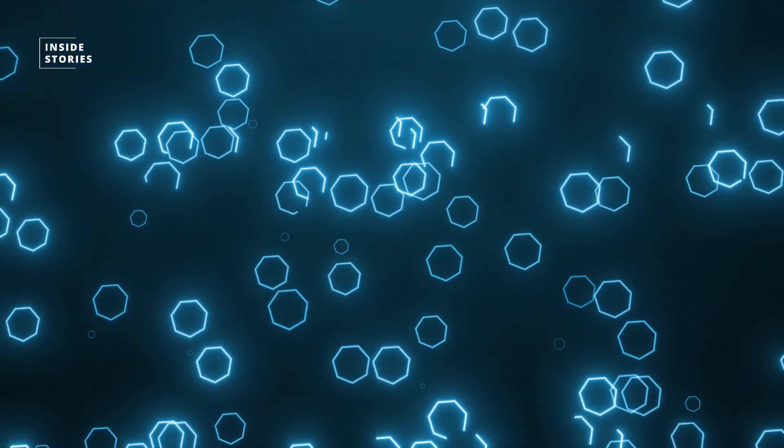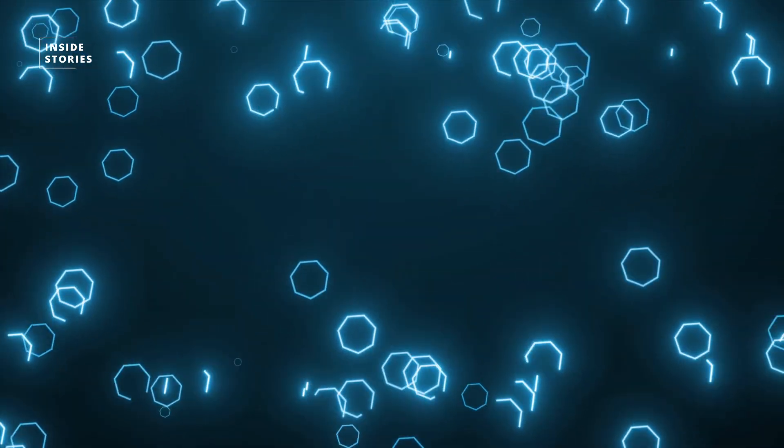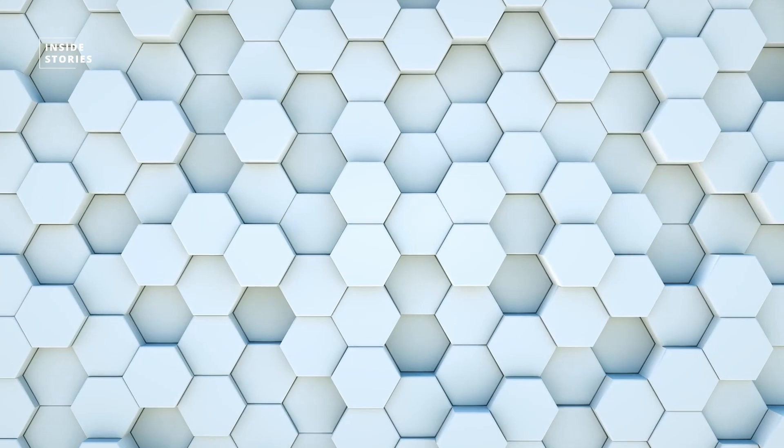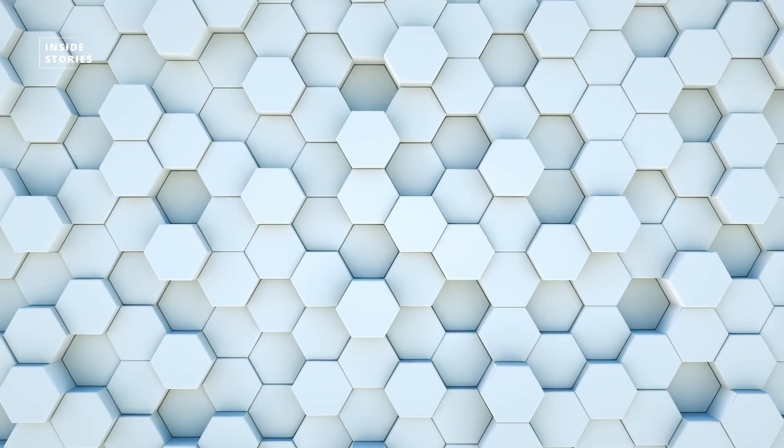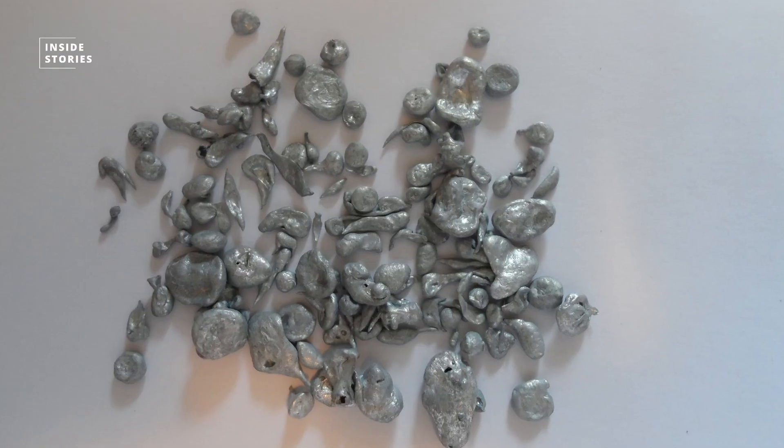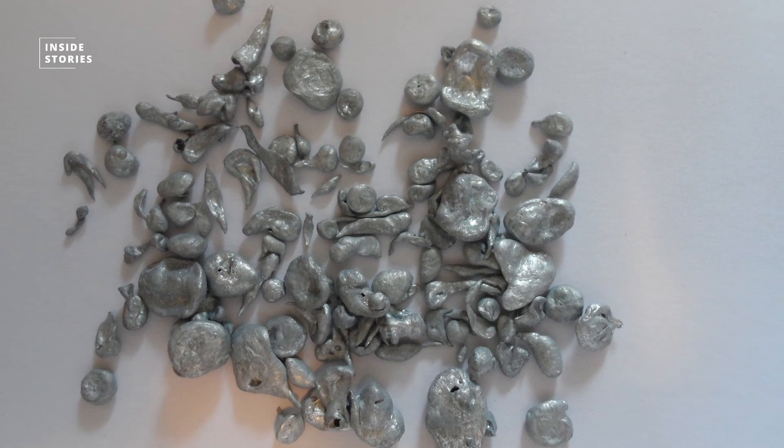Instead, the zinc particles turned into microscopic hexagonal flakes that piled up in flat layers along the side of the test battery's anode, which further helped reduce unwanted reactions with the zinc.